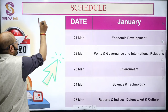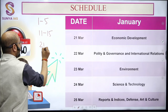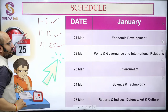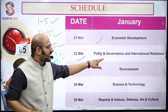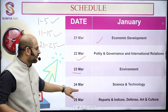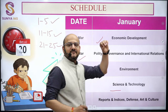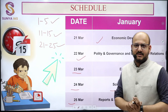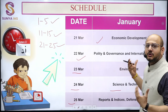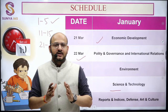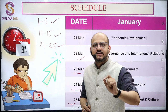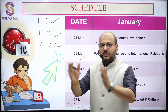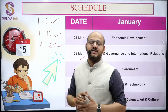In five days — 1 to 5, 11 to 15, and 21 to 25 — we cover one month's current affairs. The segregation of topics is: 21st March economic development, 22nd March polity, governance and international relations, 23rd March environment and ecology, 24th March science and technology, 25th March reports, defense, art and culture, and miscellaneous topics like government schemes.